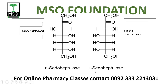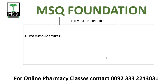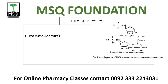Sedoheptulose has seven carbons — counting one, two, three, four, five, six, and seven, we have seven carbons altogether. Now coming to the chemical properties, the first chemical property we study is formation of esters. We recommend you write these in your lecture notes as you follow along. The second property is oxidation of monosaccharides — oxidation can be defined multiple ways: it can be loss of electrons, or it can be addition of oxygen.